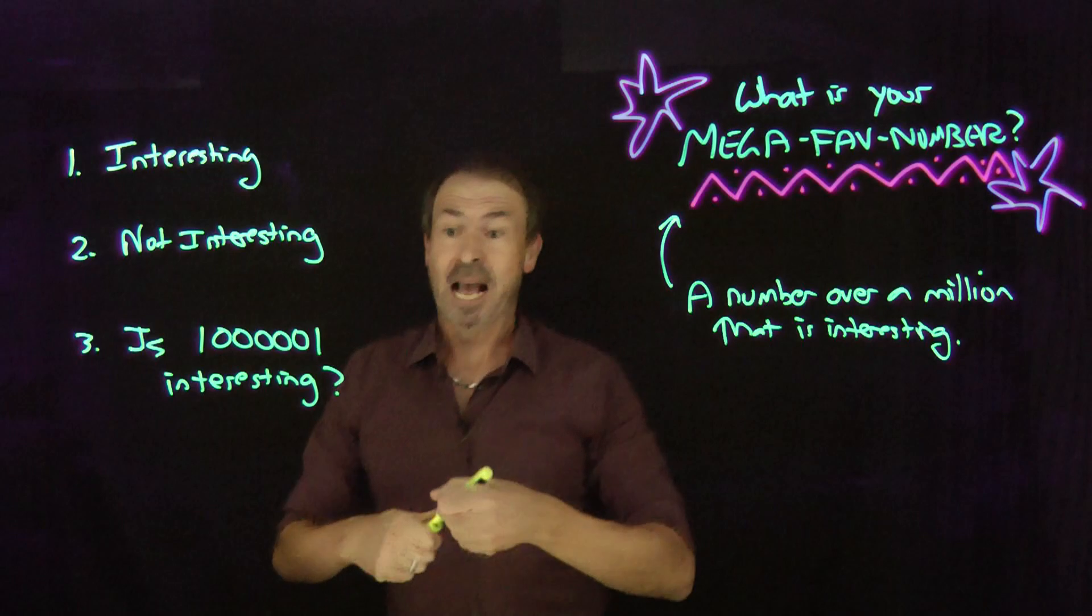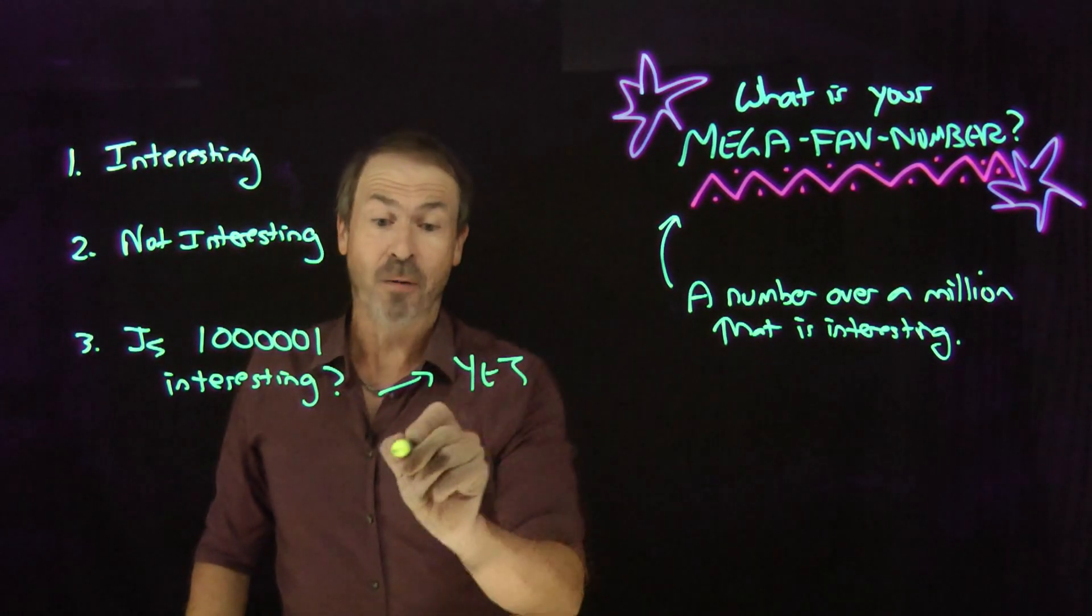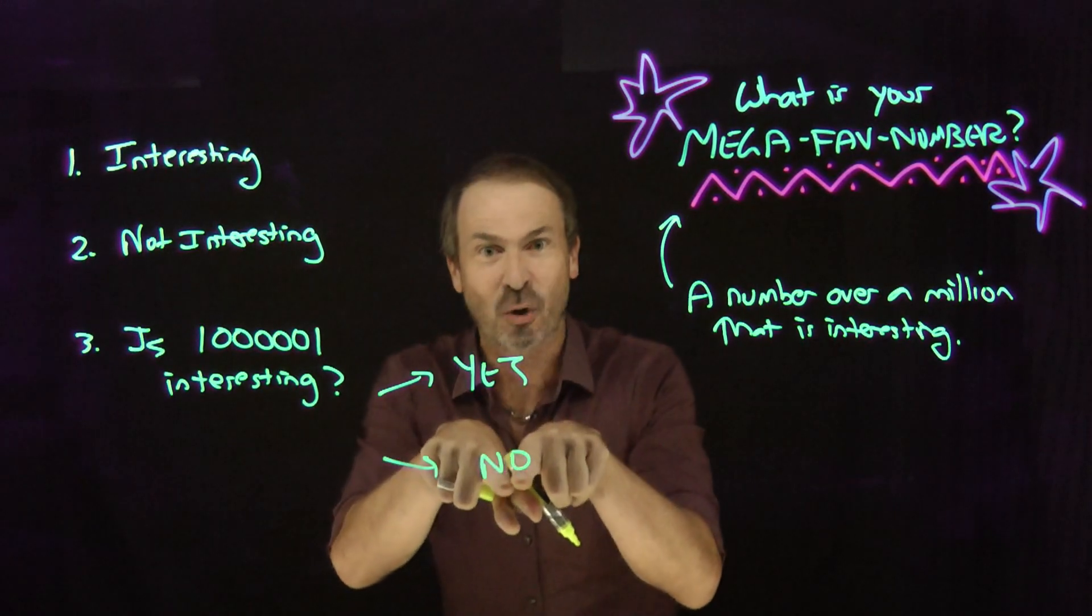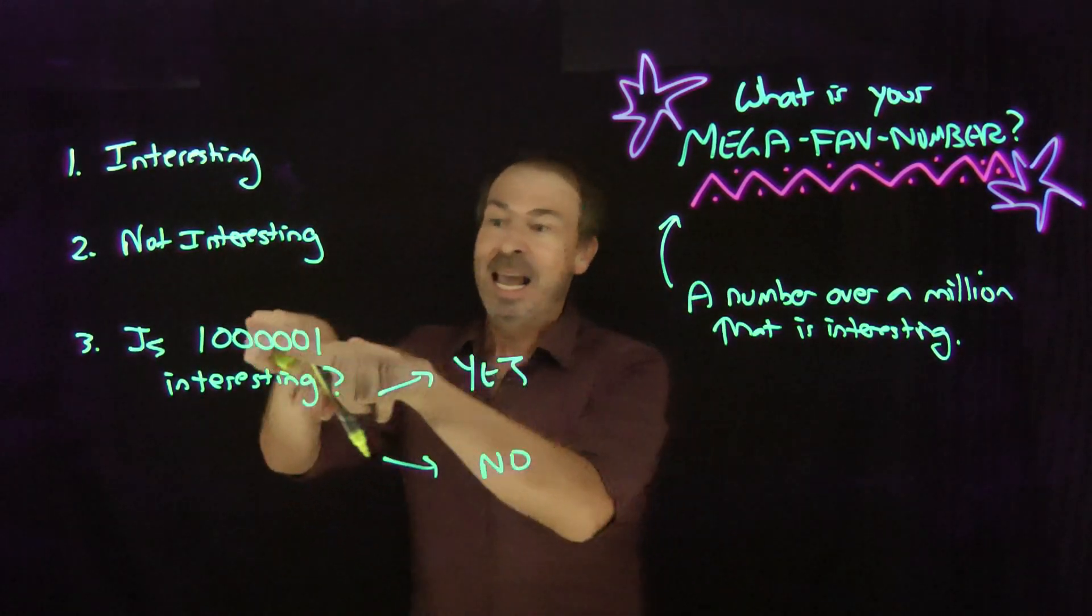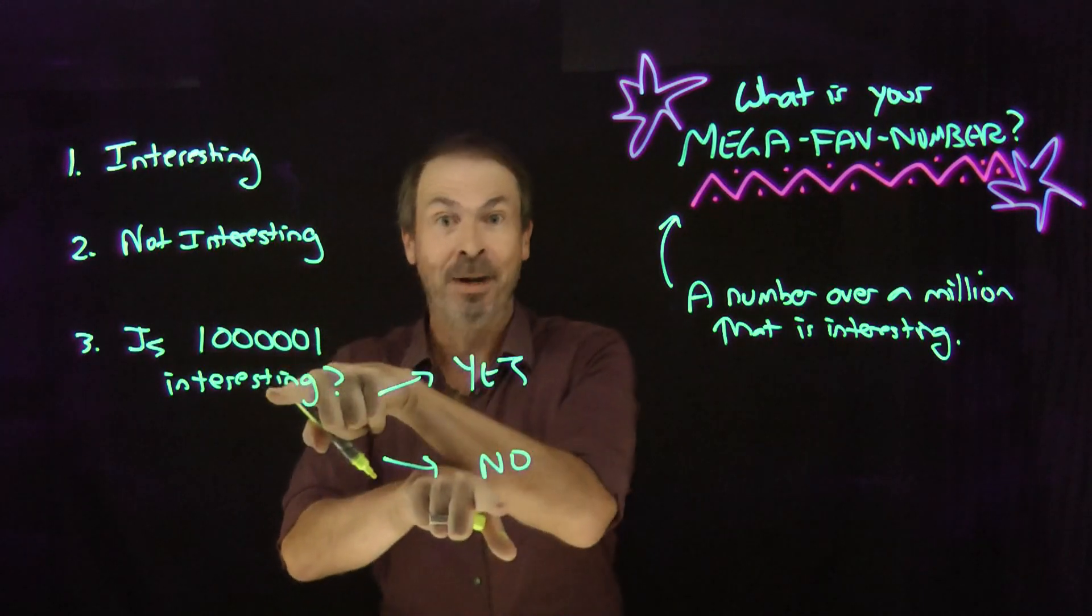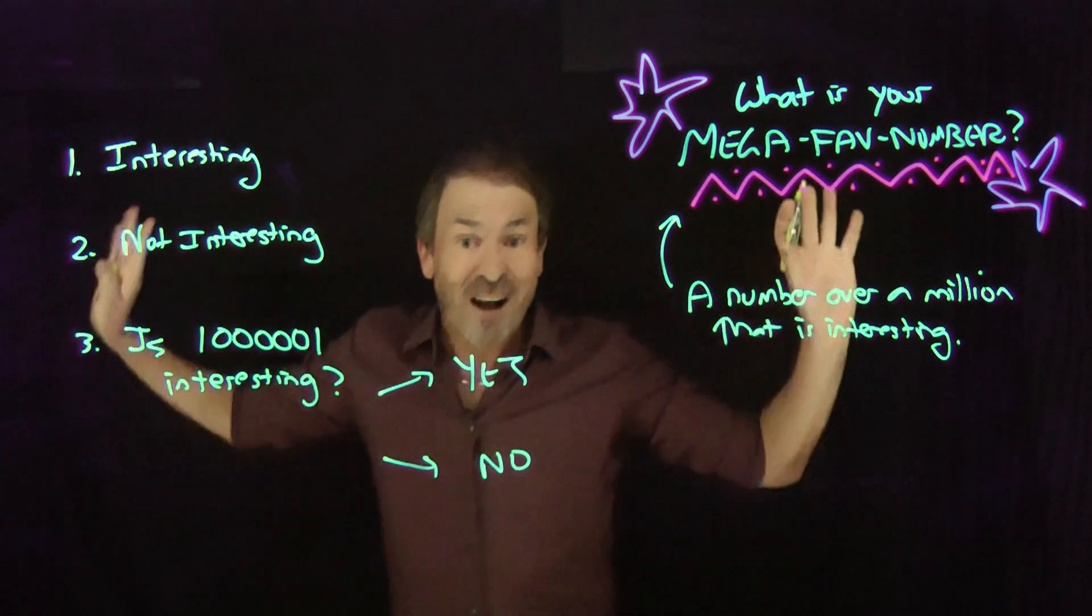Now by pure logic, the answer is either yes or no. Two choices, it's interesting or it's not interesting. In fact, I can delete this choice by pure reasoning. Here goes. If a million and one is not interesting, then it will be the first mega number that's not interesting, which I find interesting.